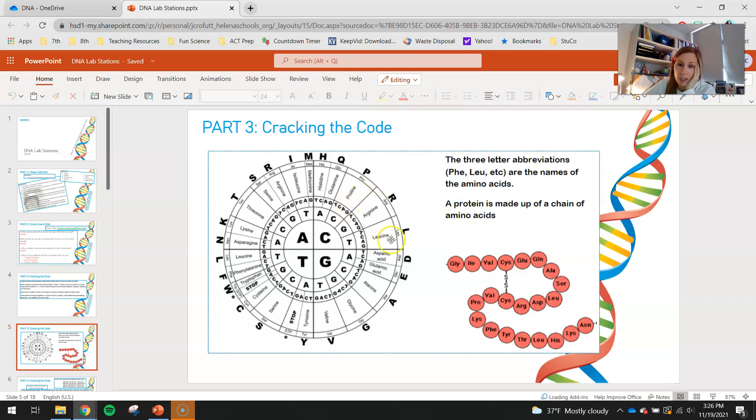Proline is one of those 20, arginine, leucine, aspartic acid, glutamine. We abbreviate these with these three-letter abbreviations right here. So A-R-G would represent arginine, S-E-R serine, threonine T-H-R, lysine L-Y-S. Those are just the 20 amino acids that we use as building blocks to make all of our proteins.